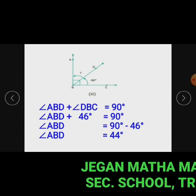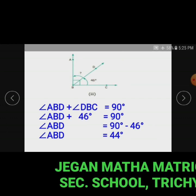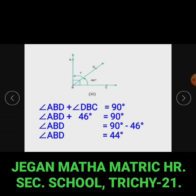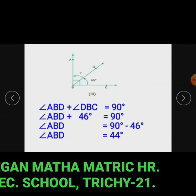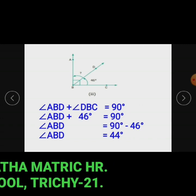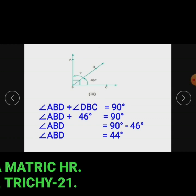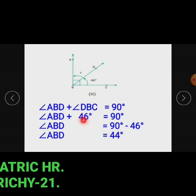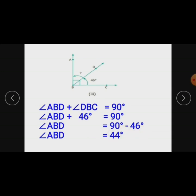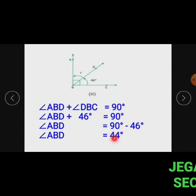Subdivision 3: Angle ABC equals 90 degrees. Angle ABC is divided into angle ABD and angle DBC. Angle ABD plus angle DBC equals 90 degrees. Angle ABD plus 46 degrees equals 90 degrees. Therefore angle ABD equals 90 minus 46, which gives 44 degrees.